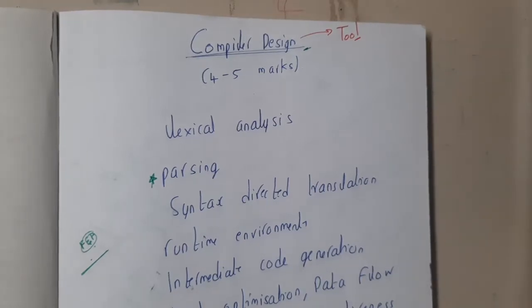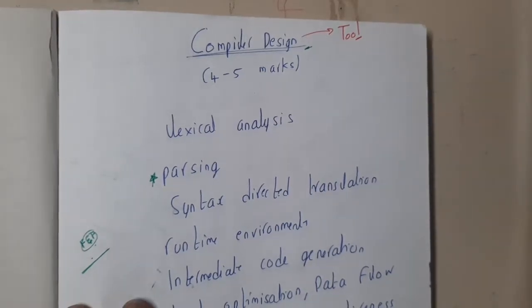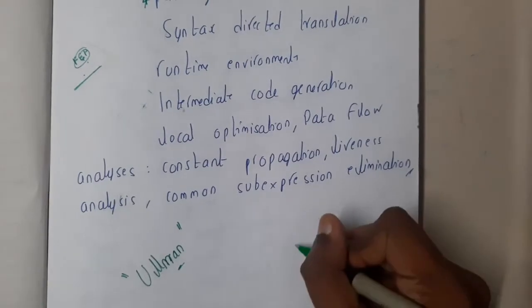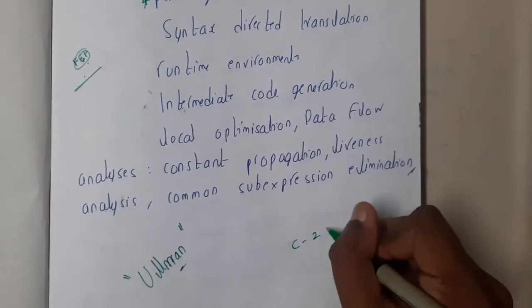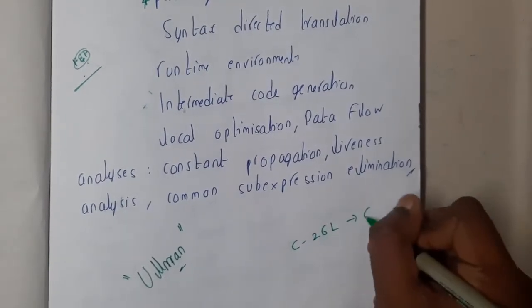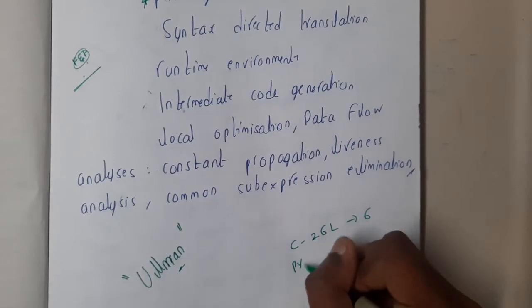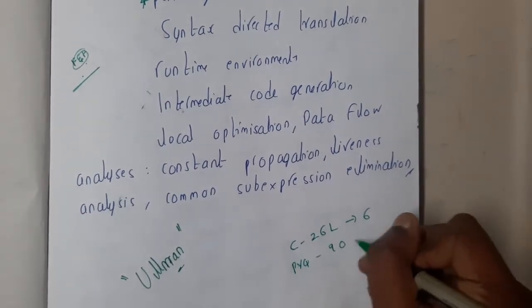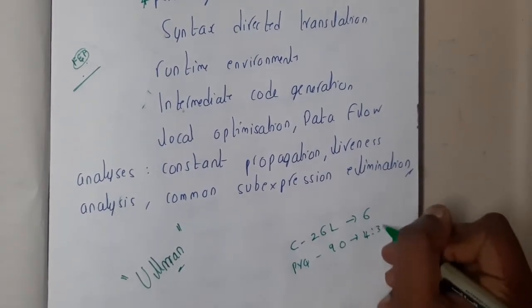Hello guys, we are back with our next lecture. This is the review video with respect to compiler designing. The total duration of the course is around 26 lectures and 6 hours. When it comes to PYQPs, we are having only 90 PYQPs and the duration is 4.5 hours.